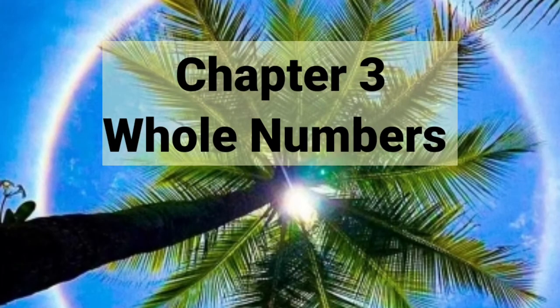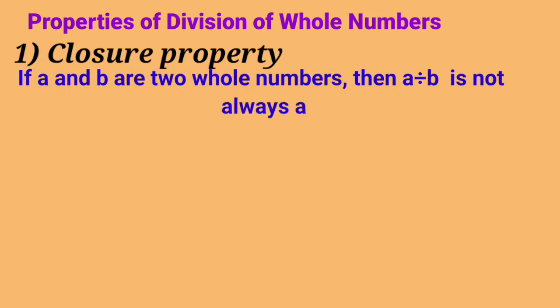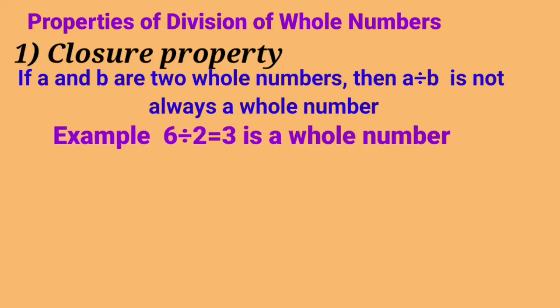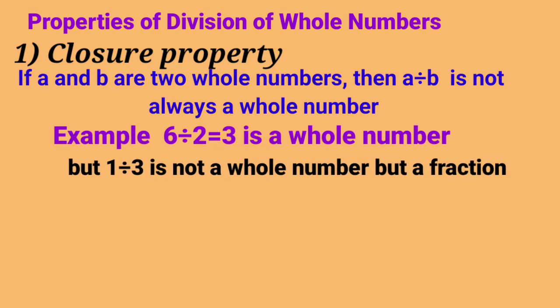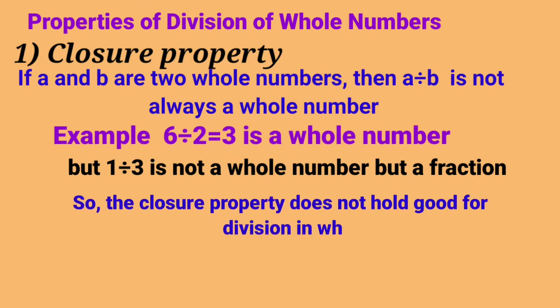Good morning children. Let's continue with chapter number 3, whole numbers, and today we are starting properties of division of whole numbers. Number 1: Closure property. If A and B are two whole numbers, then A divided by B is not always a whole number. For example, if we divide 6 and 2, the result is 3 which is a whole number, but if I divide 1 and 3, then the result is not a whole number but it is a fraction. So the closure property does not hold good for division in whole numbers.